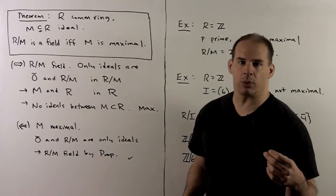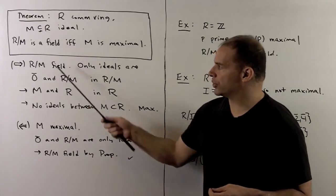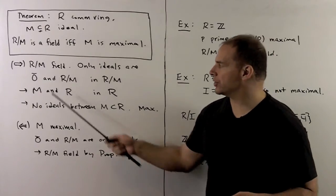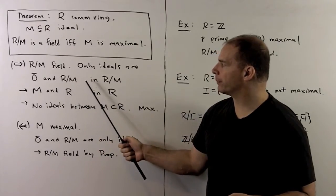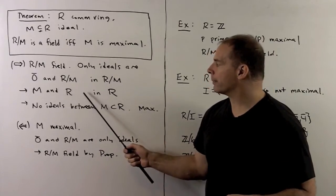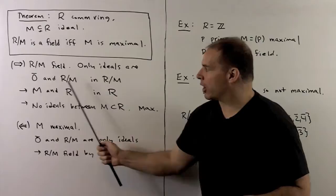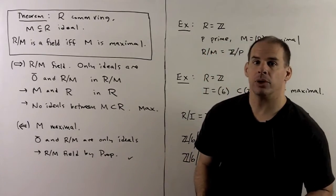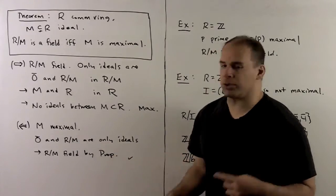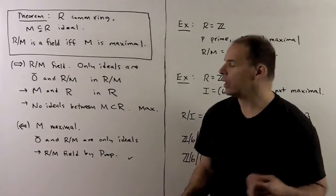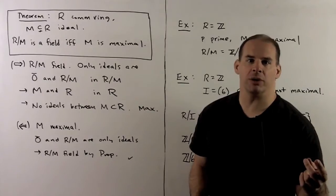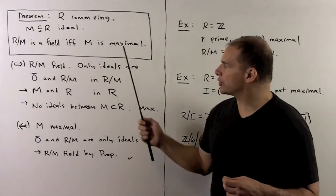With the correspondence, the theorem is straightforward. In one direction, we assume the quotient is a field. By the proposition, there are only two ideals — the zero ideal and the quotient ring itself. With the correspondence, the only ideals containing M are M itself and R, so there are no ideals between M and R, meaning M is maximal. For the other direction, we assume M is maximal. Then in the quotient ring R mod M, the only ideals are the zero ideal and the quotient itself. By the proposition, R mod M is a field.